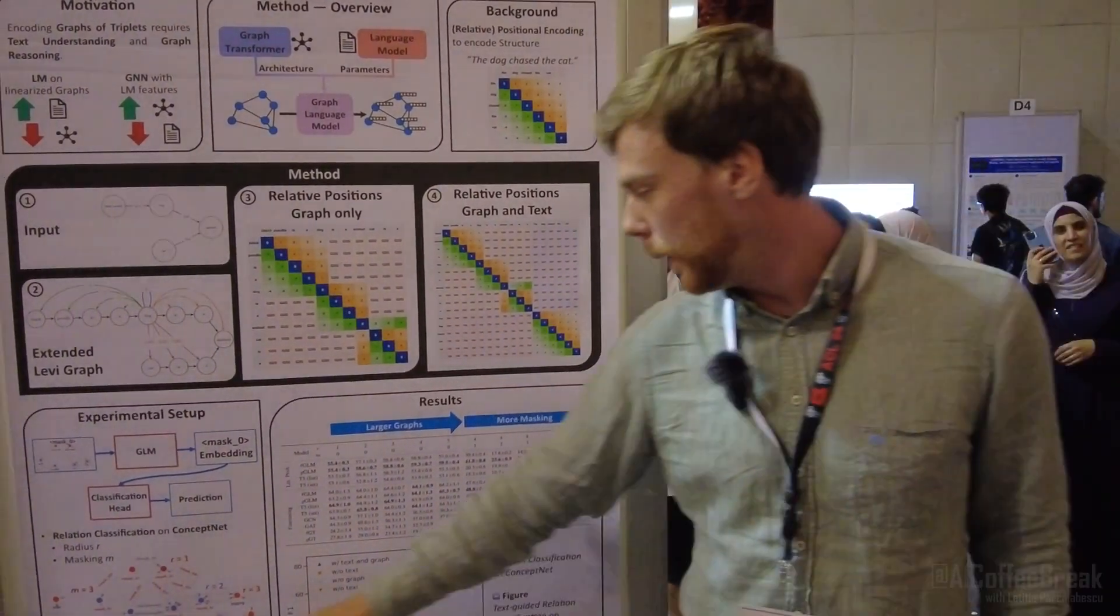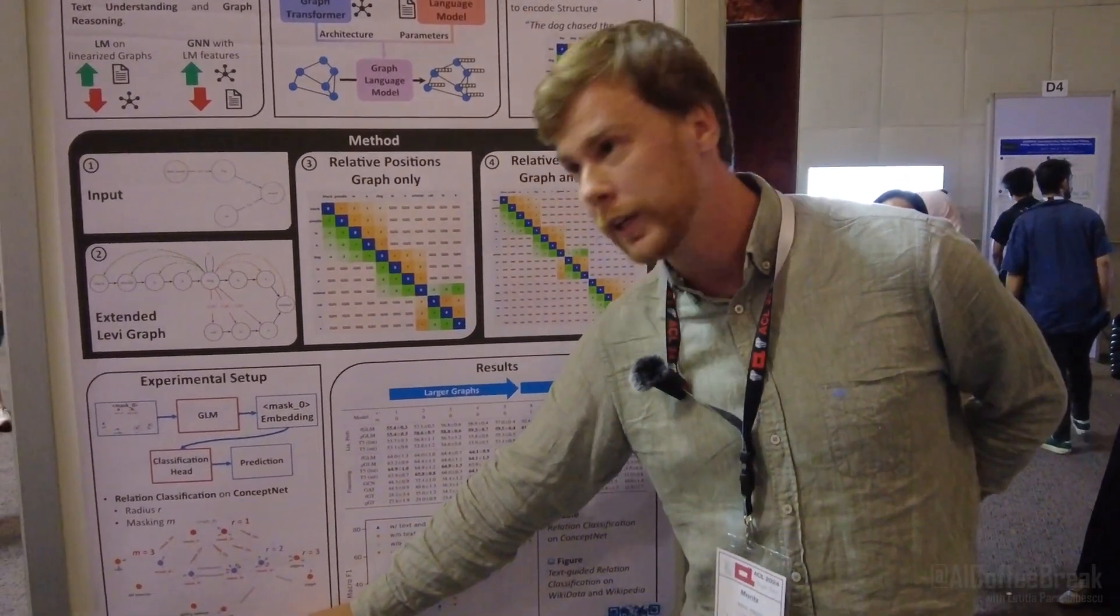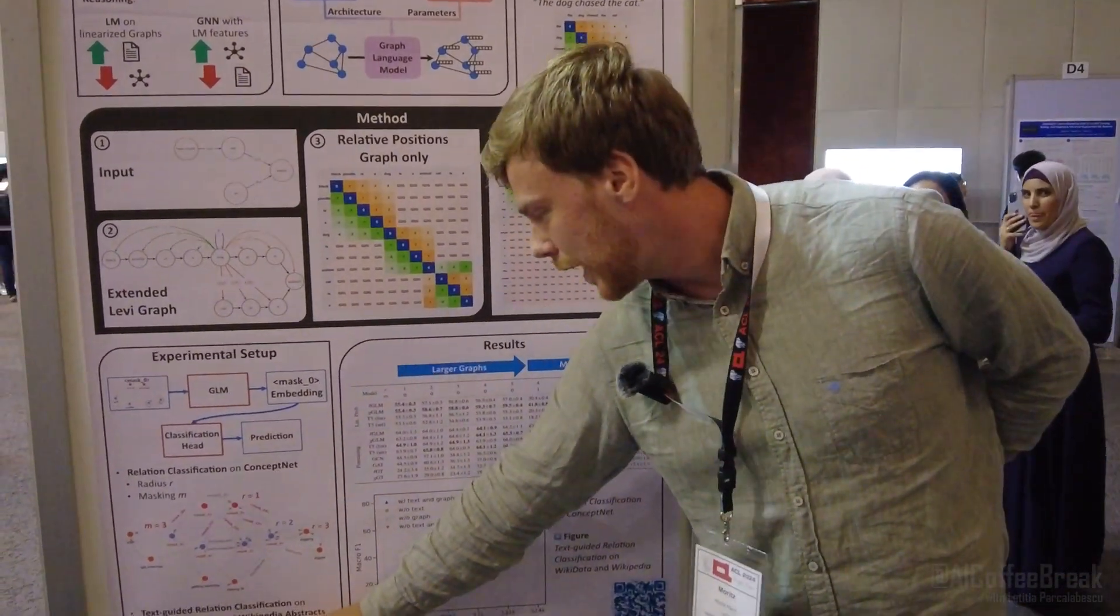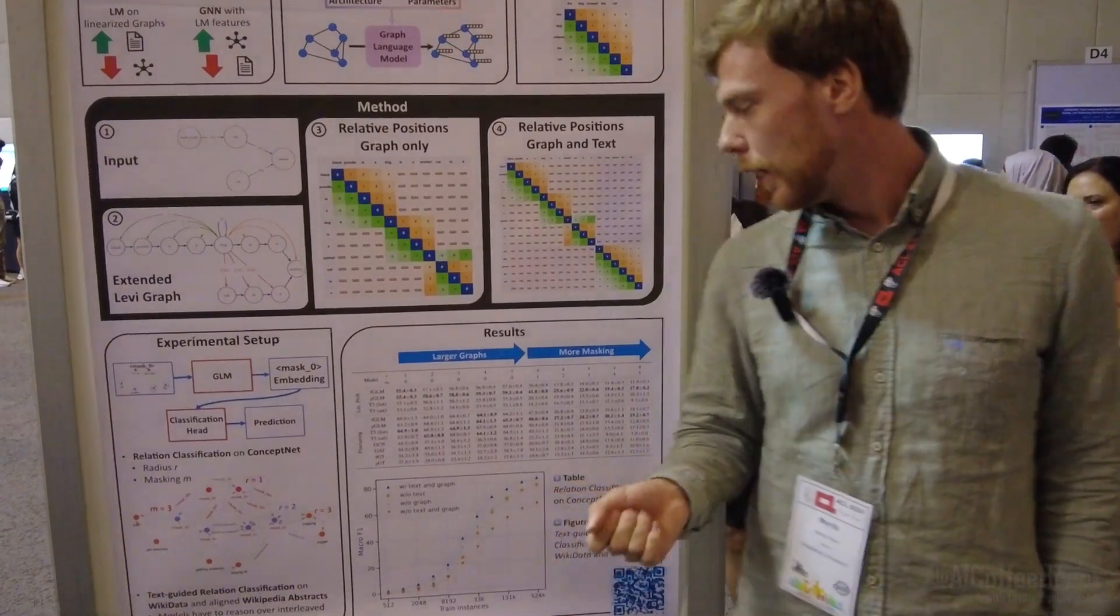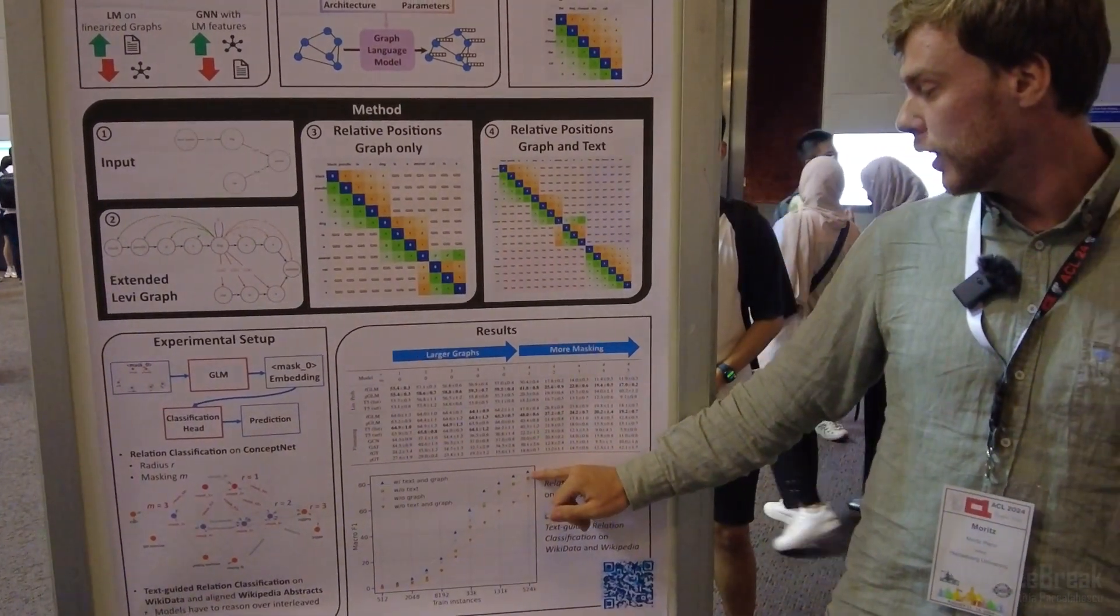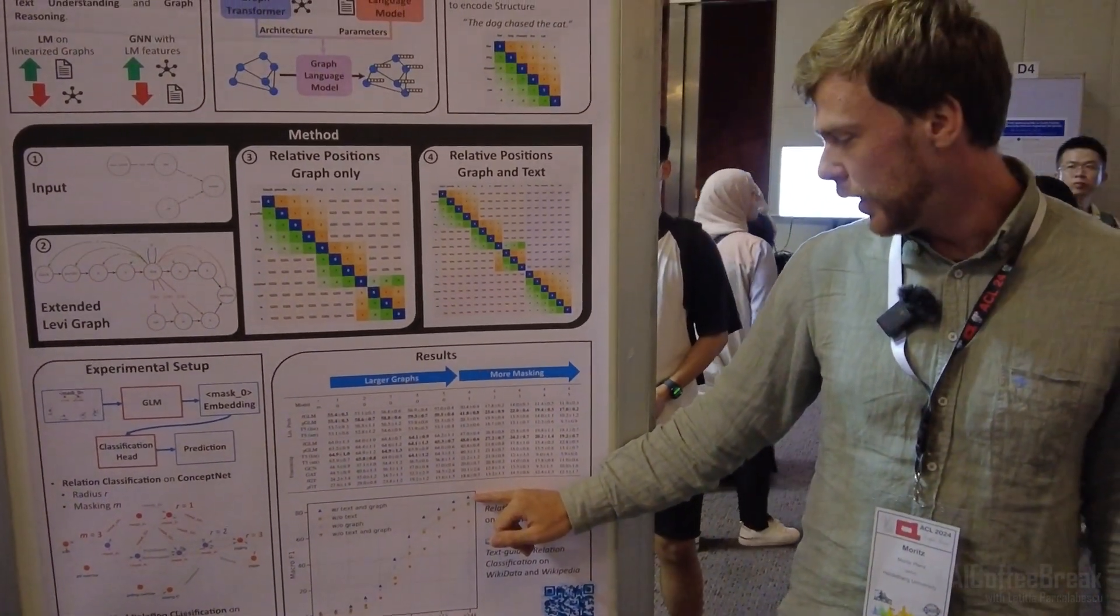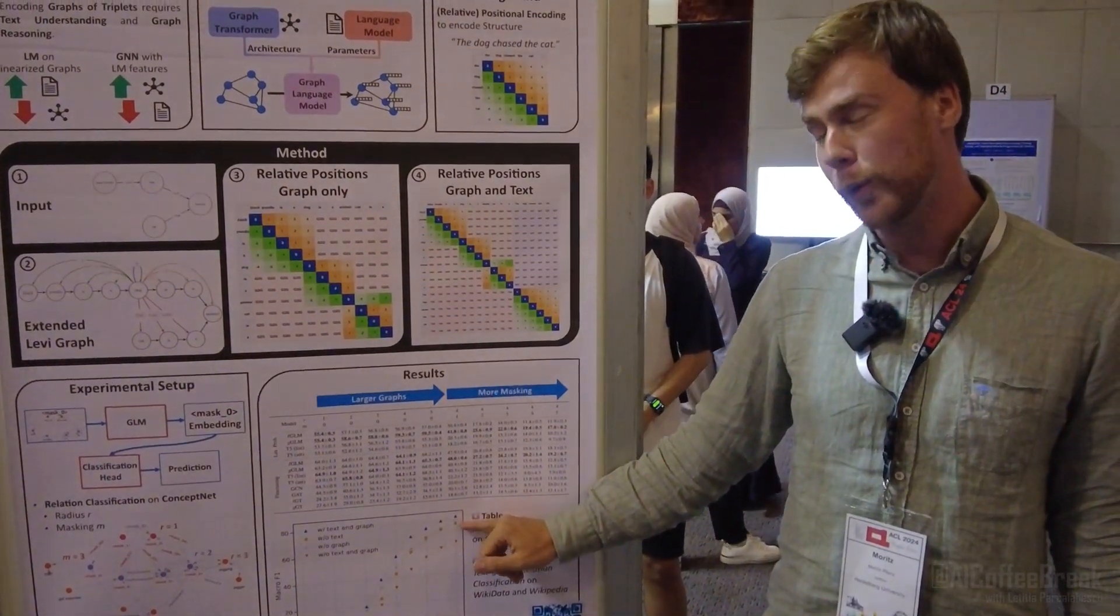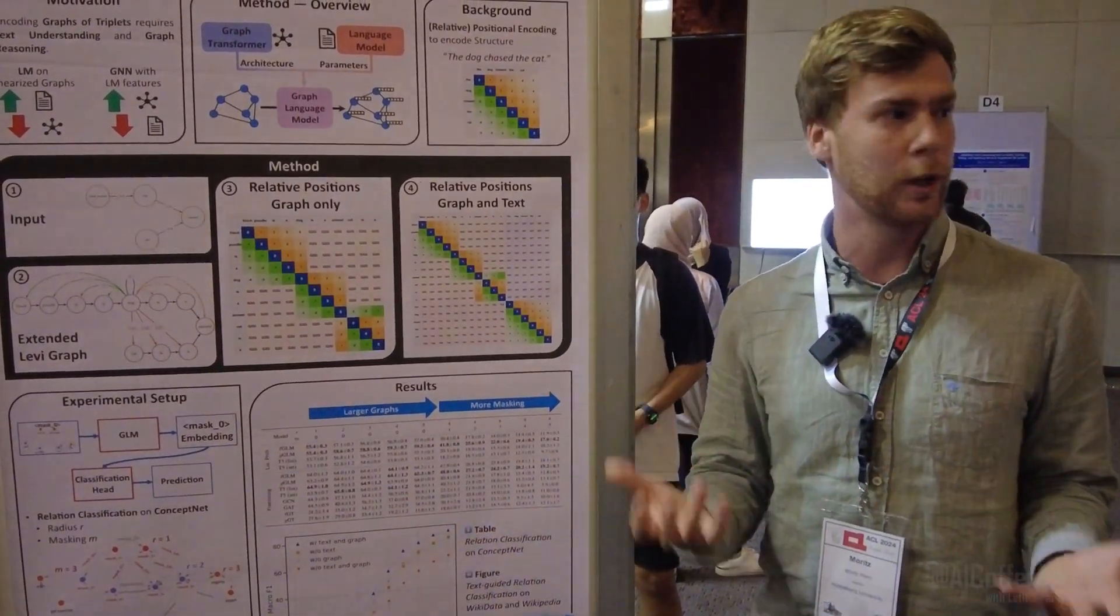We apply that to basically the same task, but now we use Wikidata subgraphs as well as aligned Wikipedia texts. We see that if you provide both modalities, the performance is best. If you ablate either modality, the performance drops by similar amount, which means the model uses both modalities.